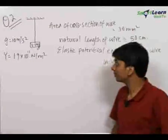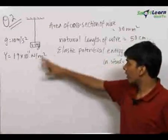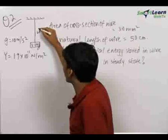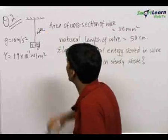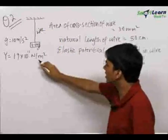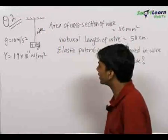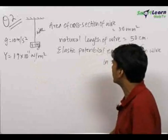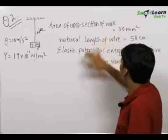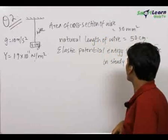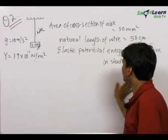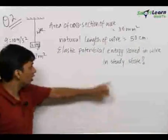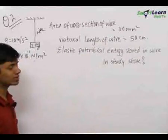Here is an interesting question. We have a block of mass 2.1 kg hanging by a wire whose Young's modulus of the material is given to be 1.9 × 10¹¹ N/m². The area of cross section of the wire and the natural length of the wire are also given. We need to find out the elastic potential energy stored in the wire in steady state.